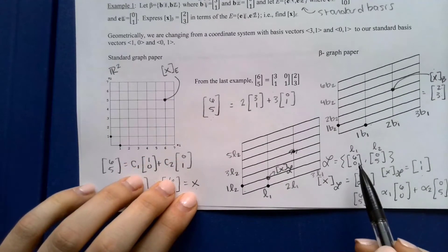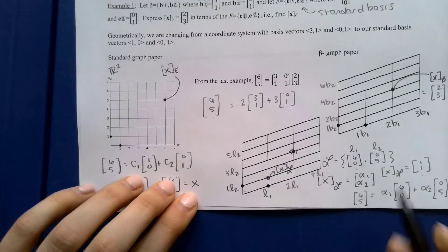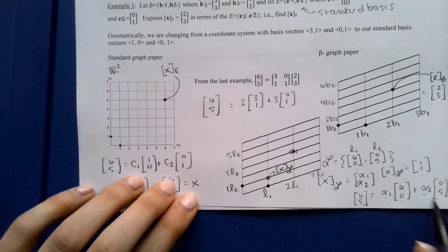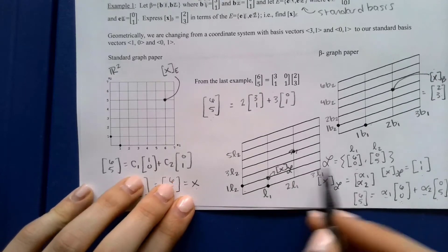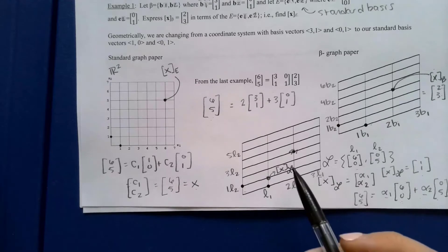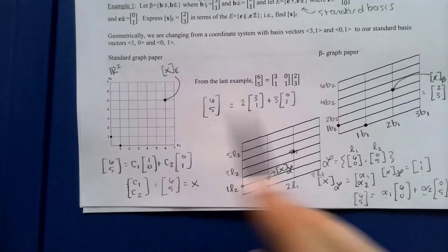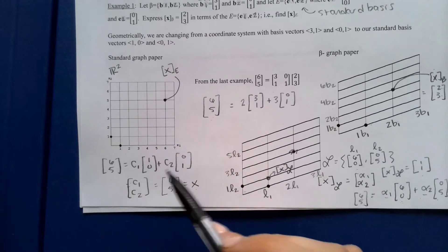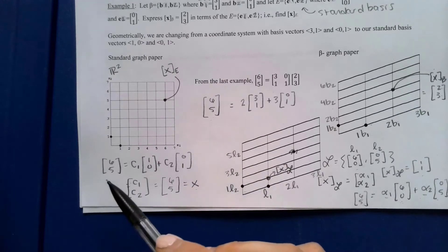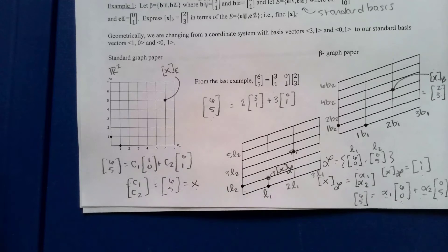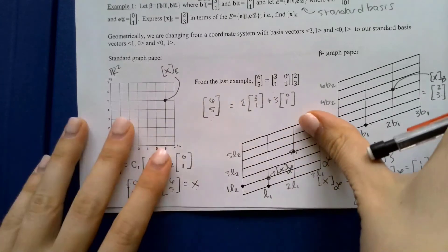As long as we have a basis, plotting a coordinate means asking: what coefficients would I multiply the basis vectors by to reach this point? Using those coefficients as the new coordinate lets us plot in any basis. We can plot in the standard basis, basis B, basis L — it helps us change between systems. Our focus is always on those coefficients.